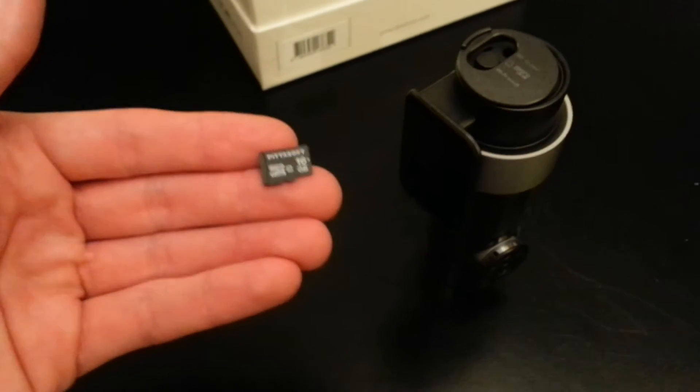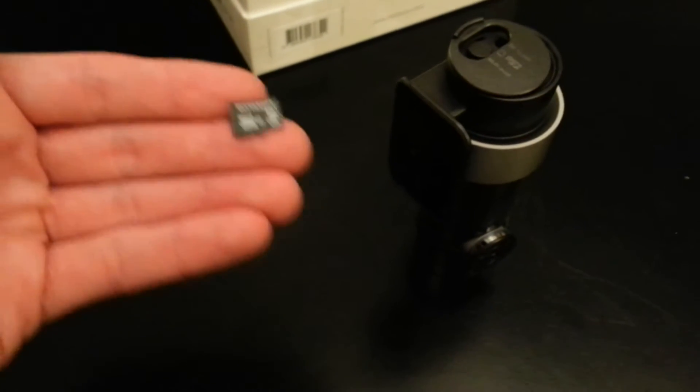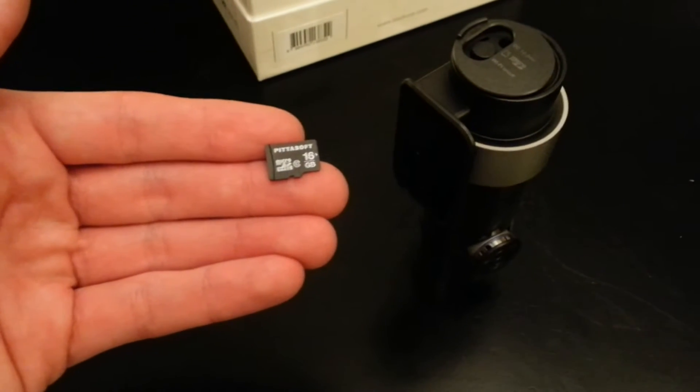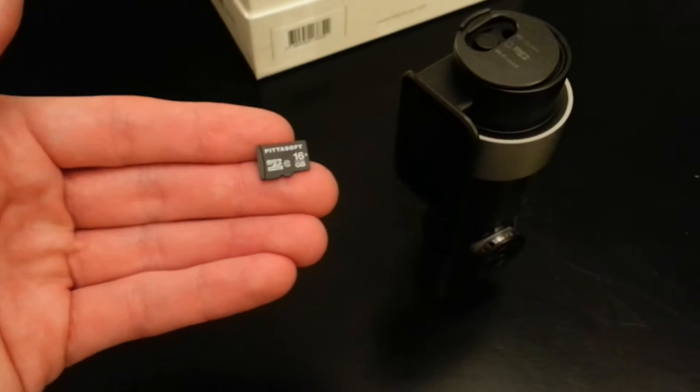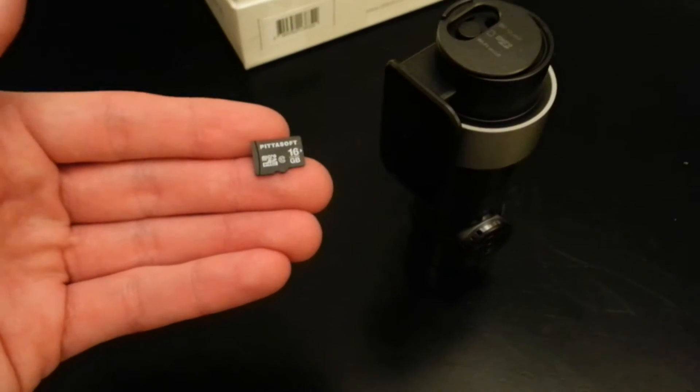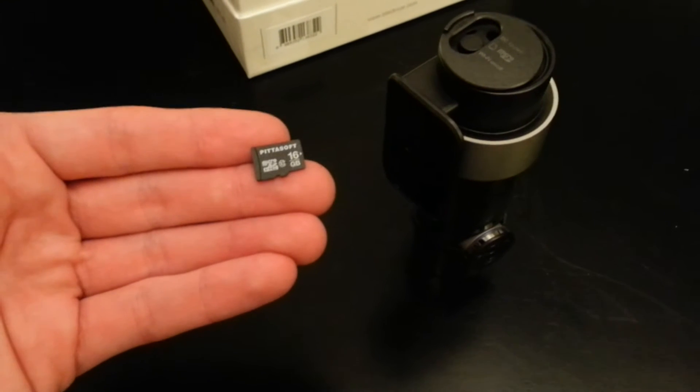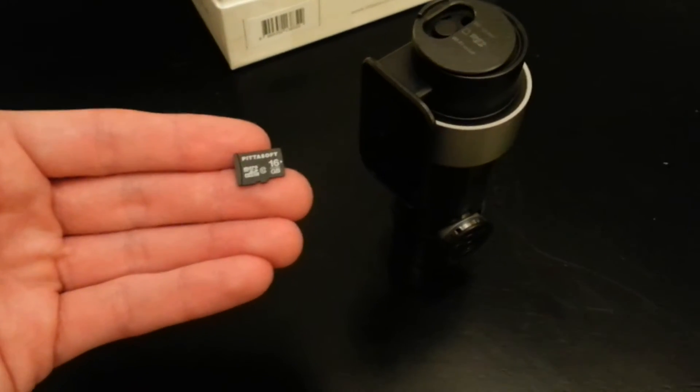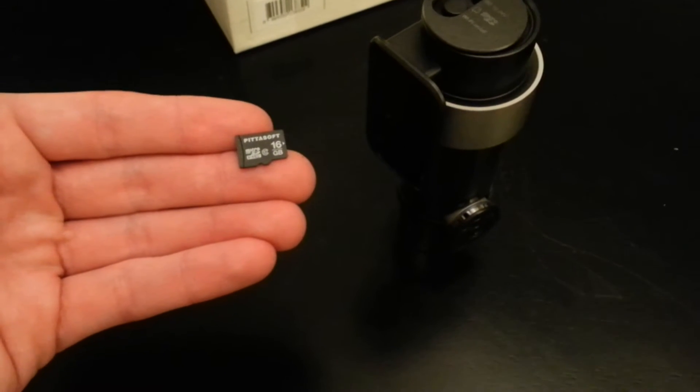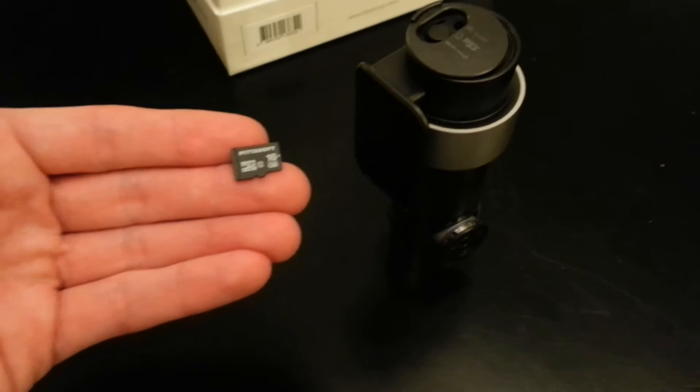It's labeled Petasoft, which is surprising because last time when I ordered a DR400, and again that was on eBay, it only came with a Class 6 16 gig card and it was a Samsung SD card. This is Petasoft, so I don't know. I'm guessing Petasoft is either rebranding SD cards or they're making their own SD cards.